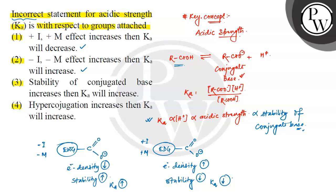Now, the first statement involves plus-M (electron donating group), which is directly proportional to stability of the conjugate base — this statement is correct. Our fourth statement says hyperconjugation increases, then Ka value will increase. However, hyperconjugation has no direct established relation to acidic strength in this context, making it the incorrect statement. Therefore, the correct answer is option number 4.